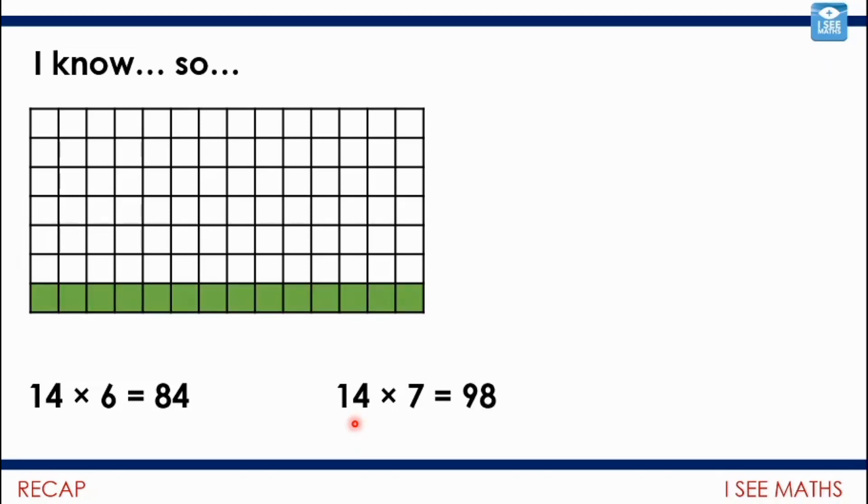Well, we'll still have 14 on the top row. But rather than 6 lots of 14, we're going to have 7 lots. So, of course, how much more is going to be another 14? So I can use this to work out this just by adding a 14. Let's have a look at another example. 14 multiplied by 6 is 84. How can I use that to work out 16 multiplied by 6? Tell the screen, how can I work that out? What will be different? What will the answer be? How is the picture going to look different?